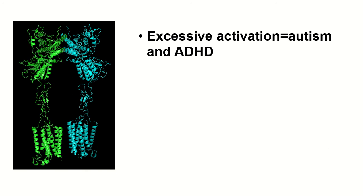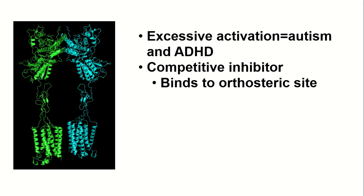An appropriate therapeutic approach to deal with these diseases is the development of competitive and non-competitive MGluR5 antagonists. Competitive inhibitors bind to the orthosteric binding site, thus blocking glutamate from binding to the active site. However, previous studies have shown that the orthosteric binding site shares similarity among different subtypes of the metabotropic glutamate receptor, suggesting that competitive inhibitors have low selectivity for MGluR5.